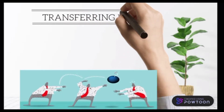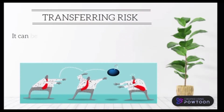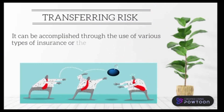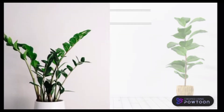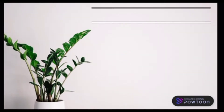Our first T is transferring risk. It can be accomplished through the use of various types of insurance, or the payment of third parties willing to take the risk on the organization's behalf.